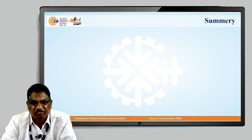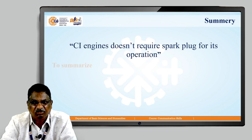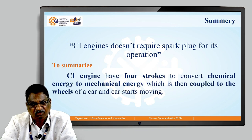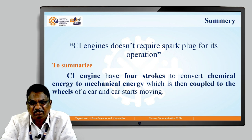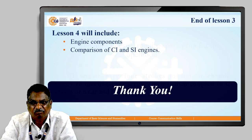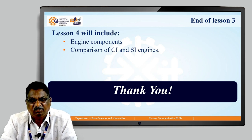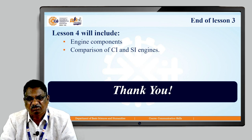This is the summary of this lecture: CI engines do not require a spark plug for their operation. CI engines have four strokes to convert chemical energy to mechanical energy, which is then coupled to the wheels of a car to make it move. This is the end of lesson number 3. In lesson number 4, you are going to study engine components and the comparison of CI and SI engines. Thank you very much.